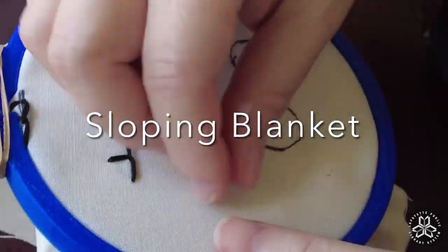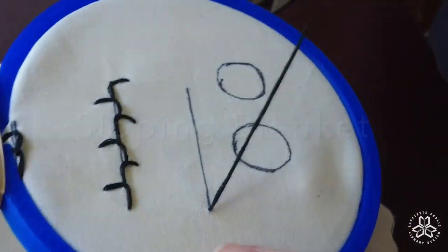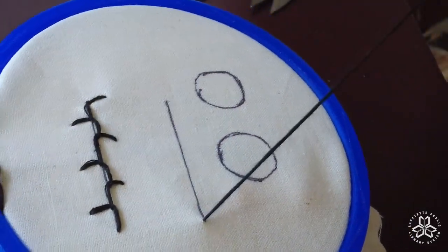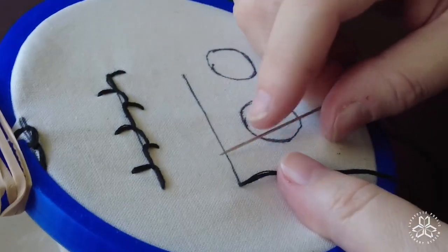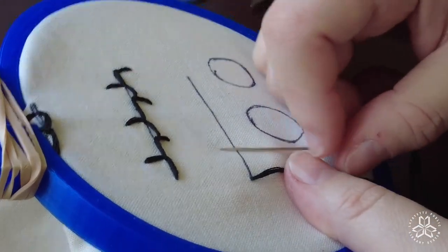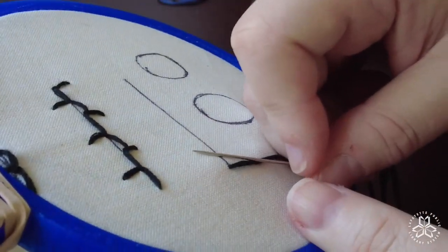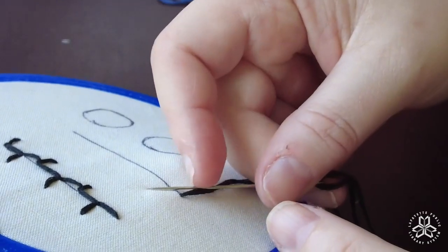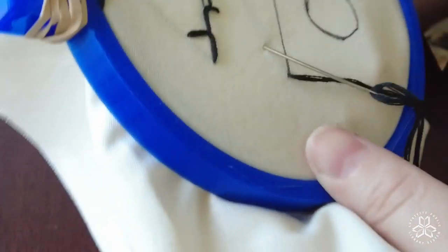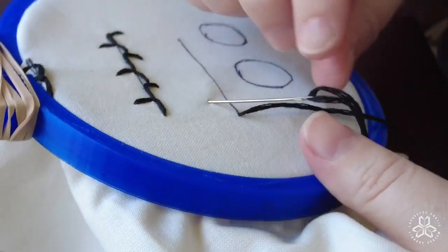Now we're going to try the sloping blanket stitch and this one I had a hard time with, so please forgive. It's going to be really wonky, but you'll get the idea. It's the same as the blanket stitch, except you're going to go at an angle. So instead of straight up, you're going to angle it. So that's what I'm doing here. I've gone over a stitch length and then I've angled my needle to the side.